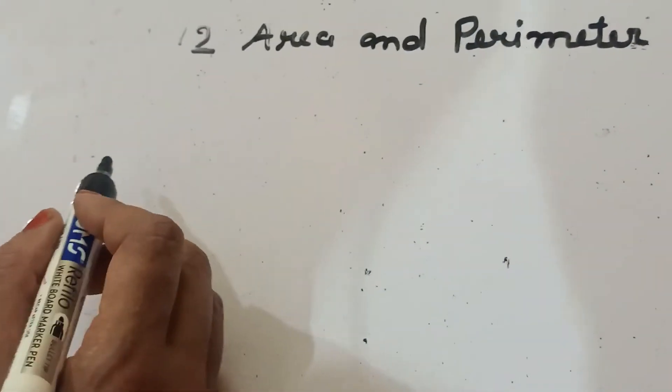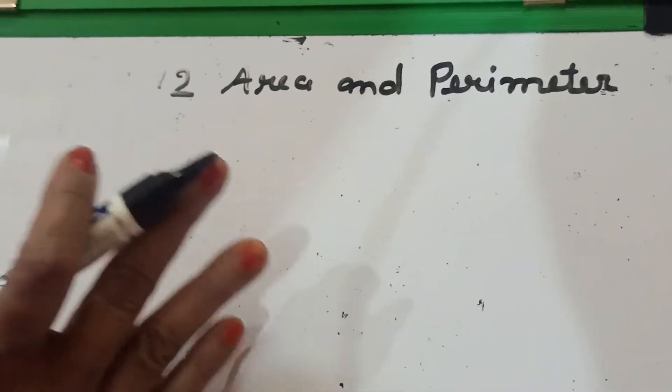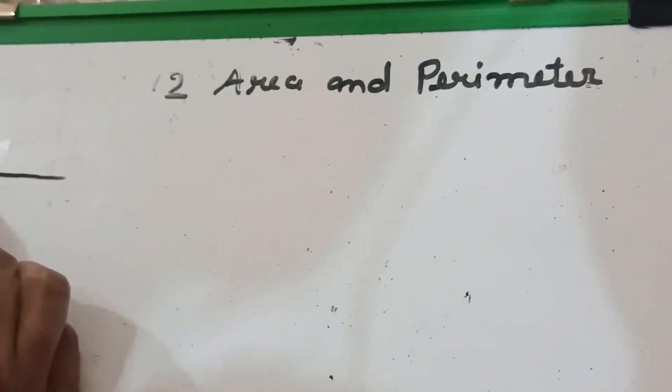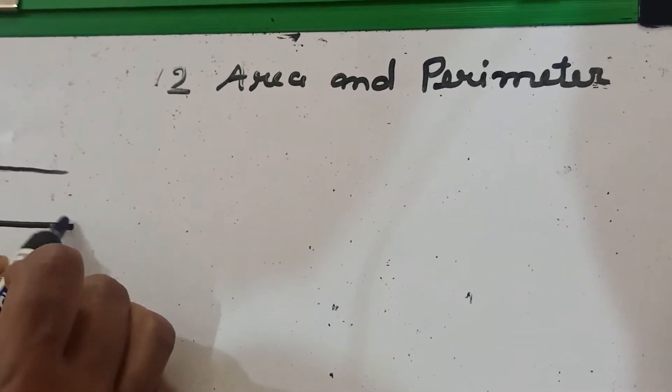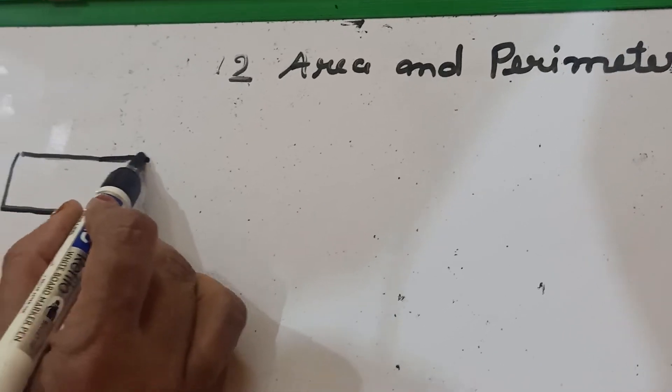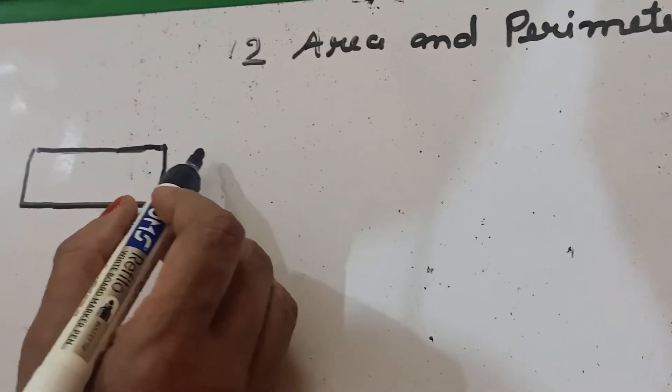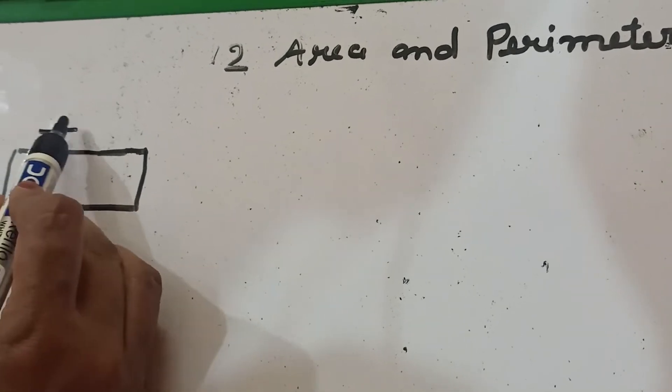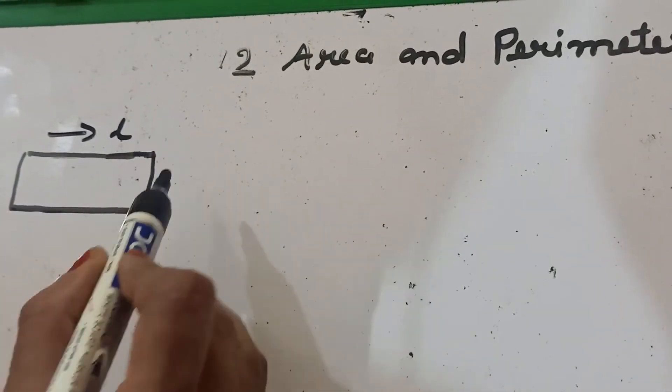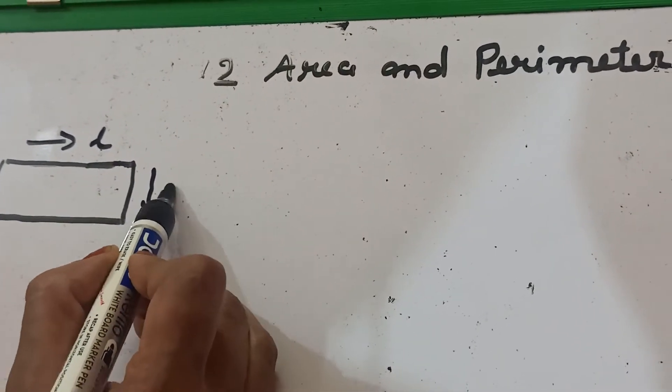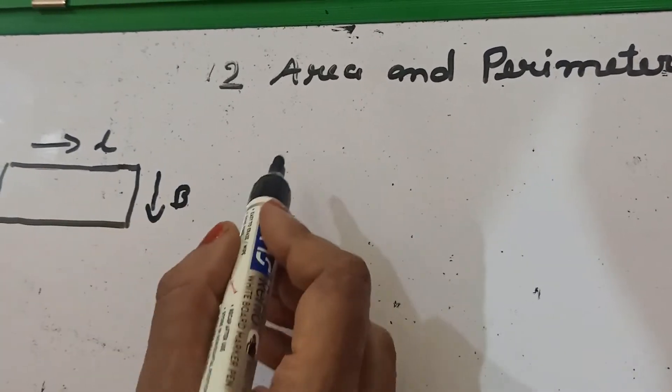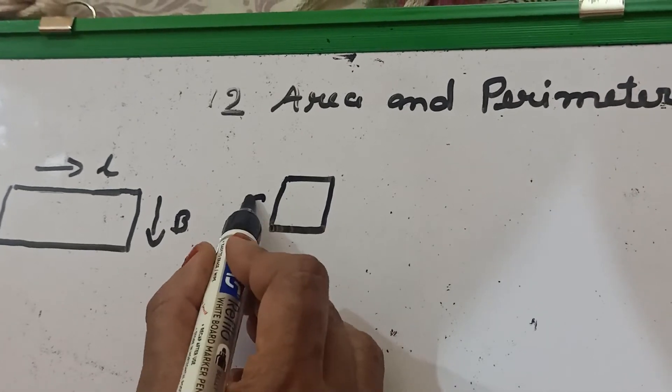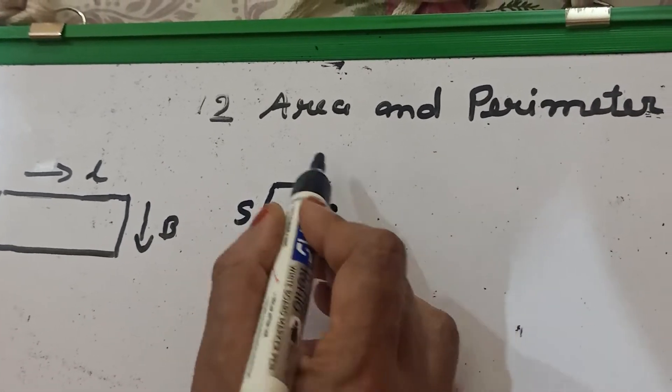So children, first you know what is rectangle. This is the shape and it is called rectangle. And in rectangle, which one is length? It is length and it is breadth. In same, square has four sides.